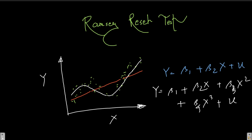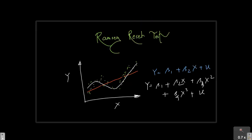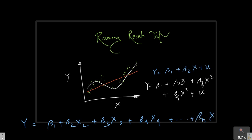But when we have many different independent variables — not just x1 but x2, x3, x4, and so on — and I fit a linear regression as y = beta1 + beta2*x1 + beta3*x2 + beta4*x3 + ... + beta_n*x_n + error term, this linear model cannot capture non-linear patterns.